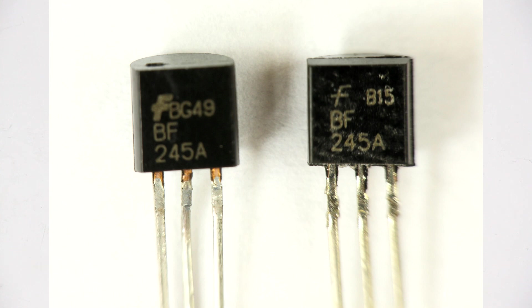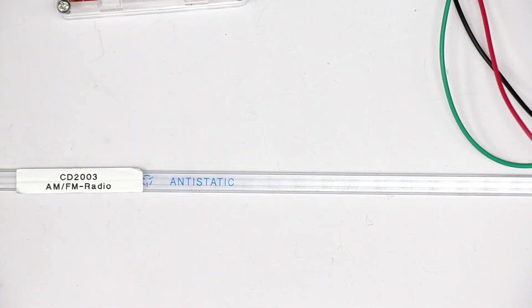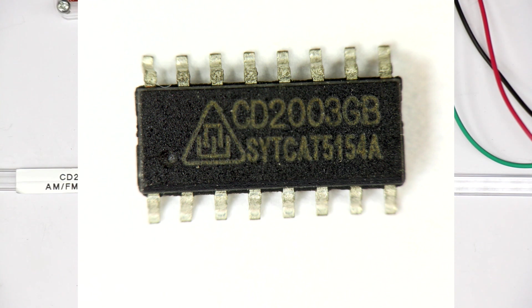The next one I can show you only a photo with a macro lens. It's a little radio chip called CD2003GB. Even this one was faked. A customer wrote to me that the circuit he built with this IC didn't work and I told him to send the circuit.